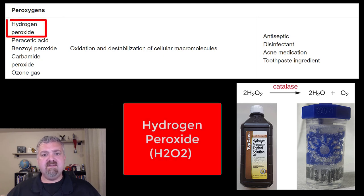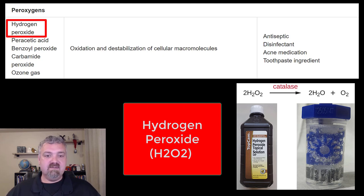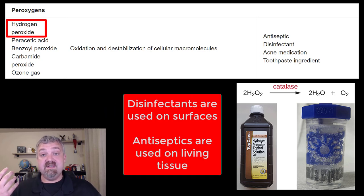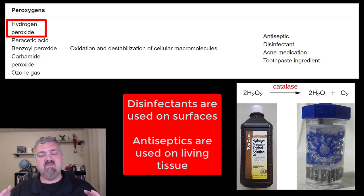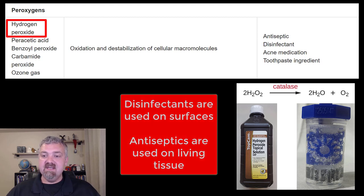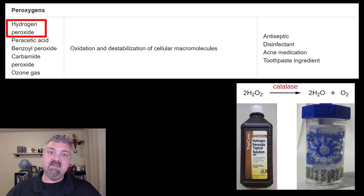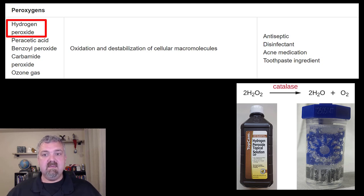Hydrogen peroxide, known as H2O2, is by far the most widely used peroxygen. It can be used as a disinfectant and an antiseptic. It can even be used as a gas — they'll spray steams or gases of hydrogen peroxide when creating aseptic packaging for food and similar applications. It generates a whole bunch of free radicals that some organisms can't deal with at all, and if you overwhelm even those that can, it will kill pretty much anything.